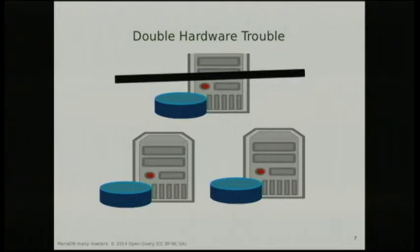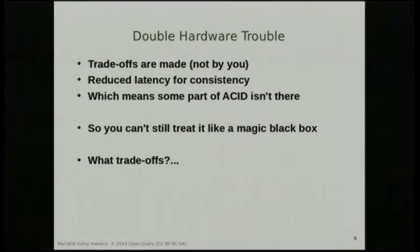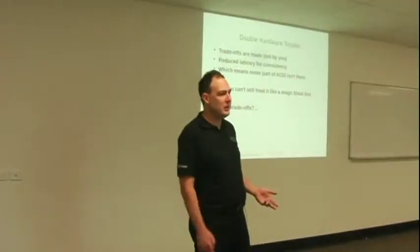Unfortunately, once you get to the database, it's been implemented such that a trade-off has already been made as far as getting additional reduced latency because you have two machines. That trade-off has been made for consistency in some ways. And as such, you really don't actually have full ACID compliance over two databases in the same way that you did with one. So what that means is you can't treat it as a black box — you've actually got to know what trade-offs were actually made.